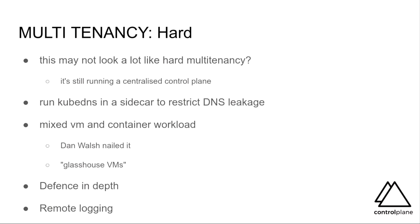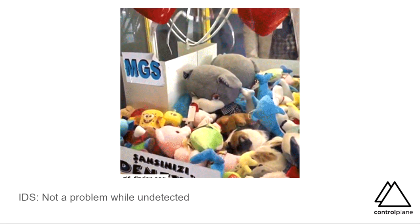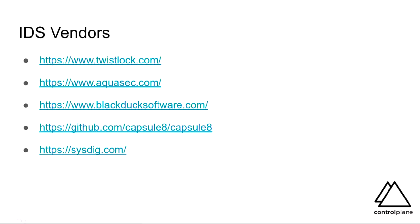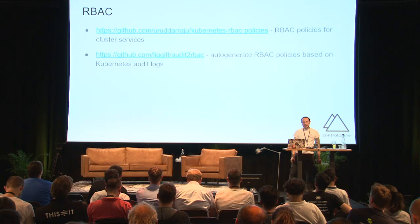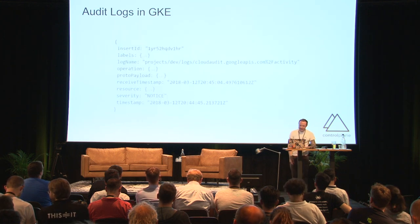Hard multi-tenancy — we trust Dan Walsh as the oracle. Once we've run all these things, we should probably be running intrusion detection. These guys all have their own different profiles. We can also auto-generate RBAC based on kubectl audit logs — a super cool tool that makes development of RBAC profiles very easy indeed.